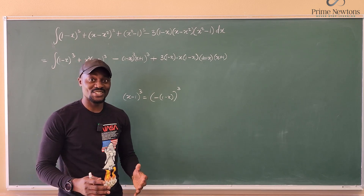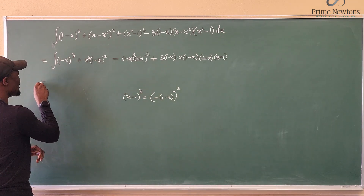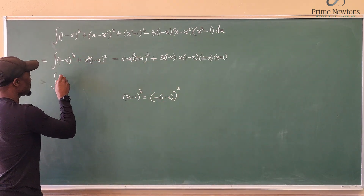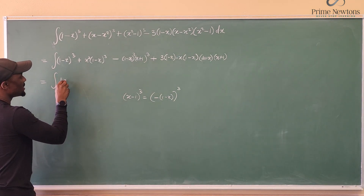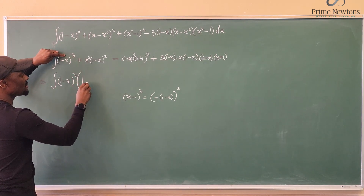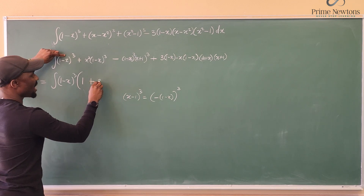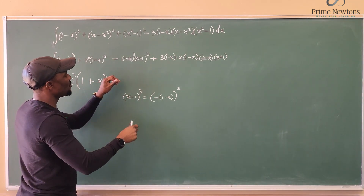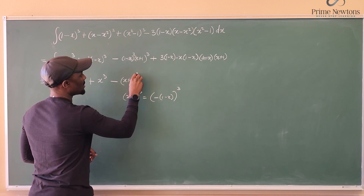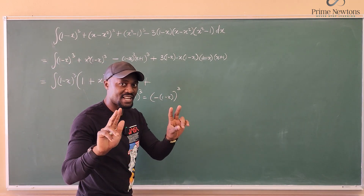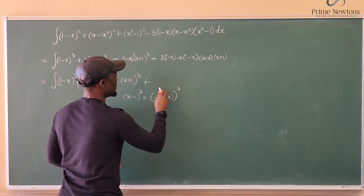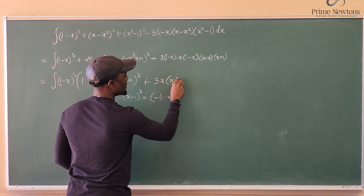Now all my (1-x) factors are aligned. My next line is to take out (1-x)³ from everything. Taking it out from each term, I'm left with: (1-x)³ times the quantity [1 + x³ - (x+1)³ + 3x(x+1)].